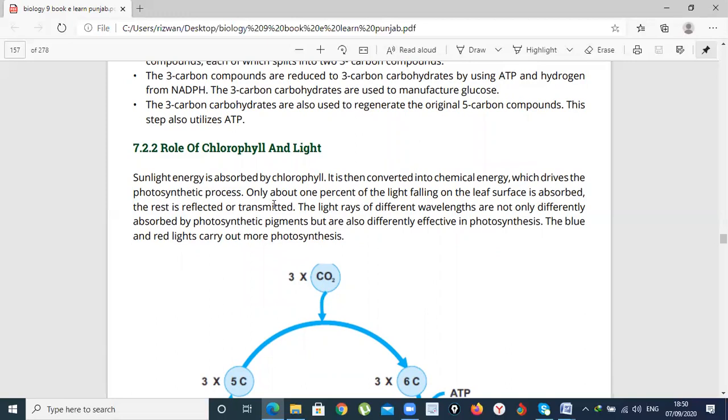We have to learn chlorophyll. Only 1% of light falling on a leaf surface is absorbed. If you observe the photosynthetic process, it will absorb 1%.